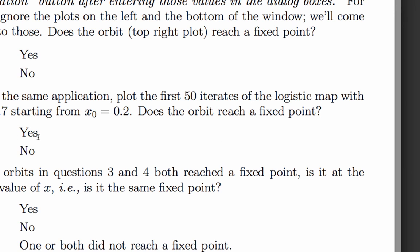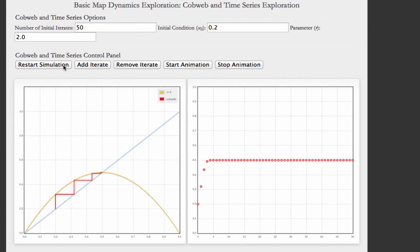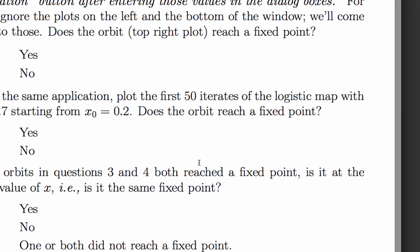The last question asks us, if the orbits in questions 3 and 4 both reached a fixed point, which is true, is that fixed point at the same value of x? So let's look back at the app. Here's r equals 2.7. Looks like the fixed point is just above this 0.6 line on the plot. There's r equals 2.0. Again, still a fixed point, but the fixed point is at x equals 0.5. So the answer is no, because those fixed points were at different values of x.